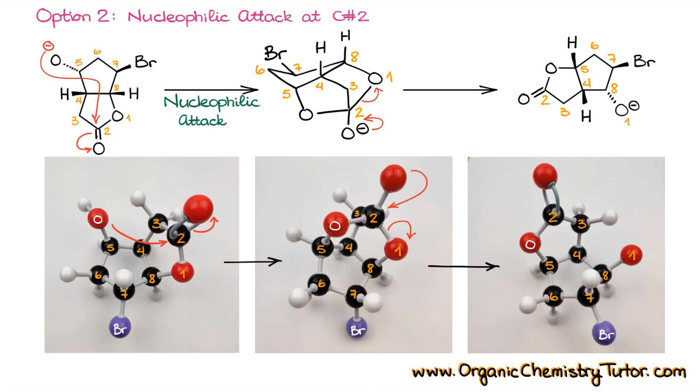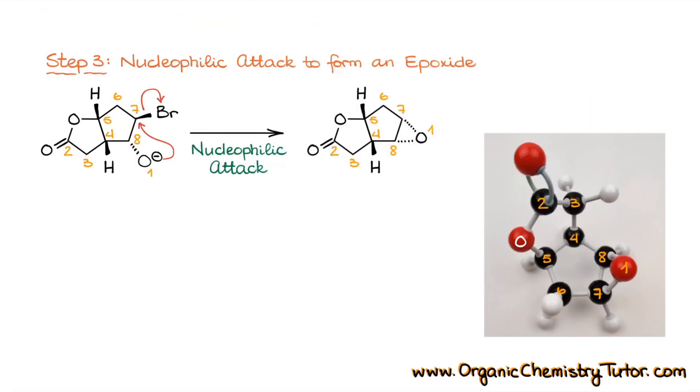But now we do have our nucleophile and our electrophilic carbon right next to each other. So nothing stops us from doing the SN2 attack between our nucleophile and electrophilic carbon over here, giving the final epoxide.